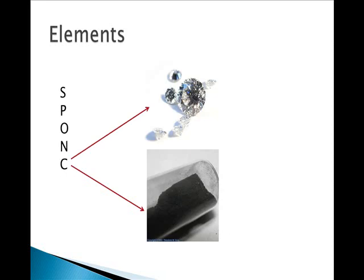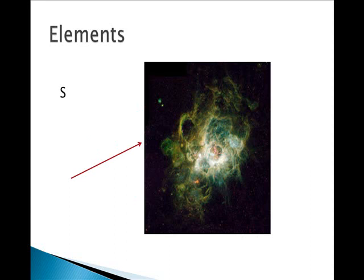Nitrogen is next. Carbon is after that, and you can see carbon comes in two flavors. It comes in diamonds and in graphite, basically. And then finally, hydrogen, which is the stuff of which stars are made.